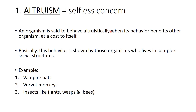When will an organism behave altruistically? When its behavior benefits another organism at its own cost. Basically, this behavior is shown by organisms that live in complex social structures. Those that live in isolation are not going to show this kind of behavior. But those that live in colonies and communities basically show this kind of behavior.